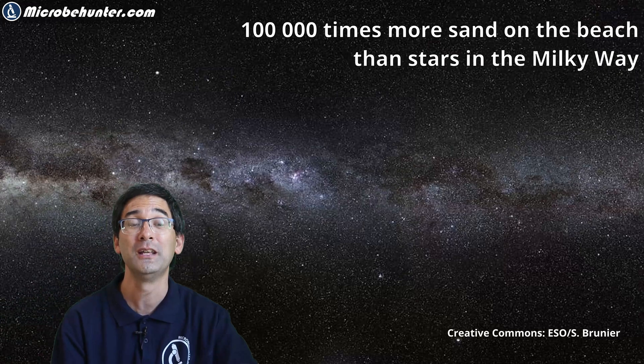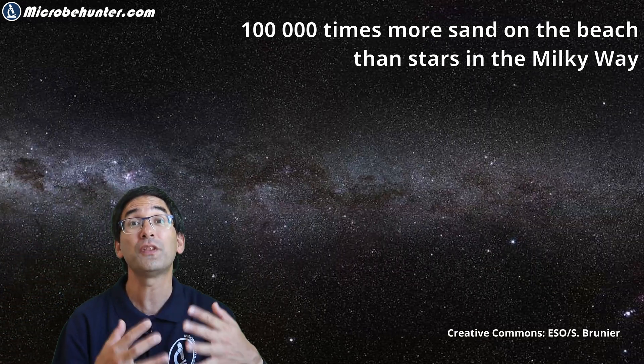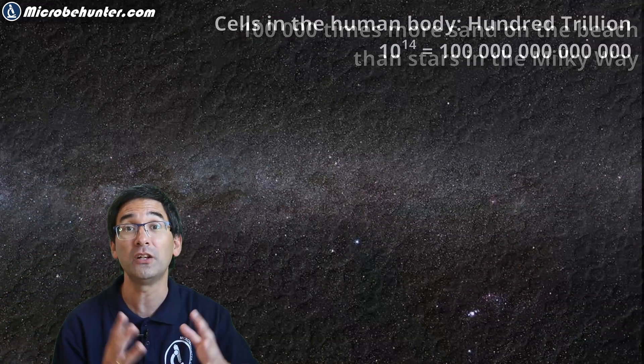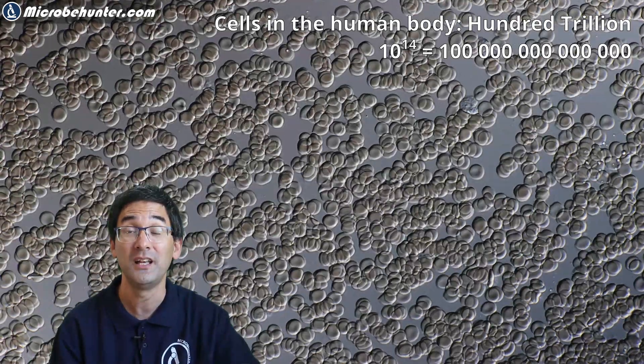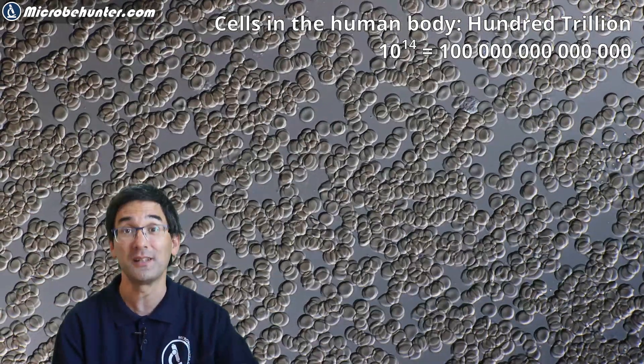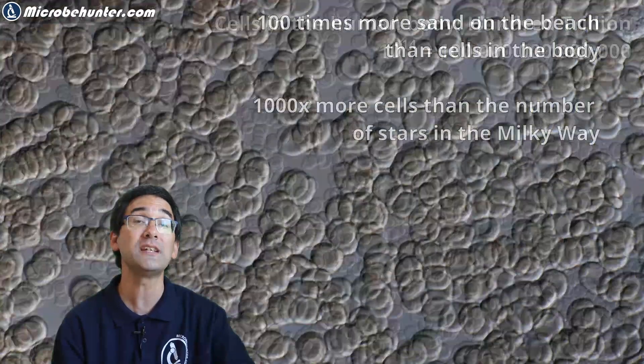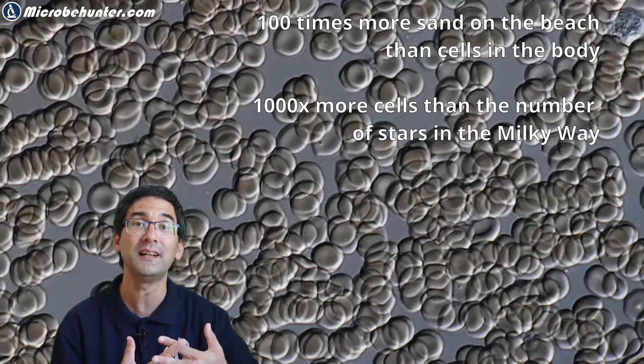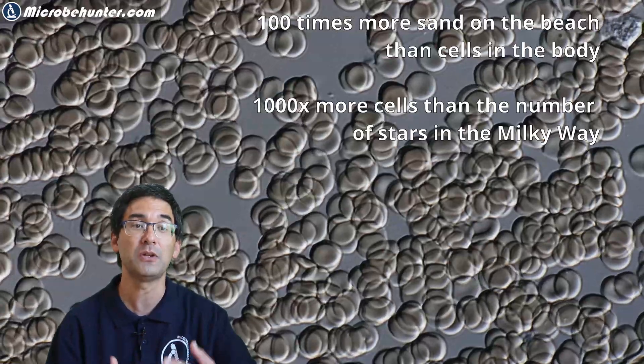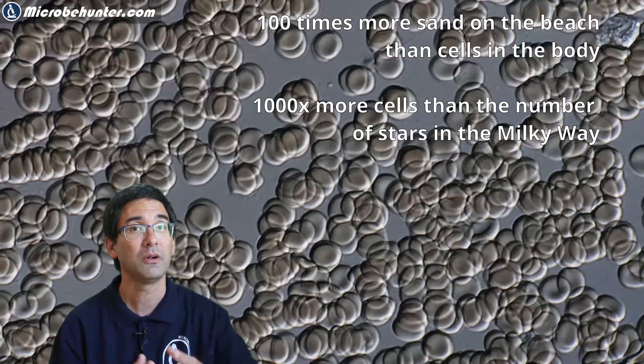That's almost nothing compared to the number of sand grains. At this scale it's really difficult to imagine but that means that there is a hundred thousand times more sand on the beach than stars in the galaxy. And for body cells, a hundred trillion body cells we have estimated, and this means that on the beach there is a hundred times more sand than we have body cells.